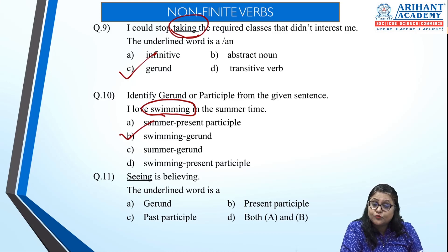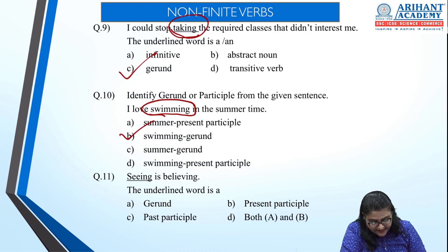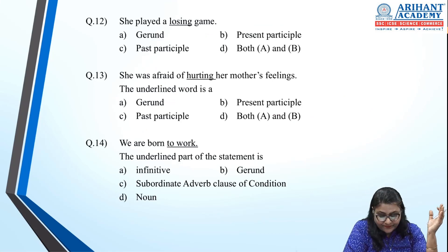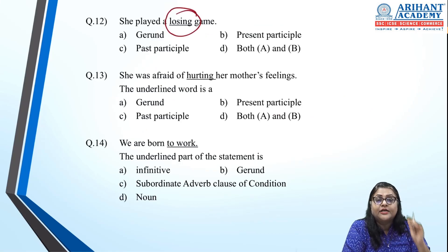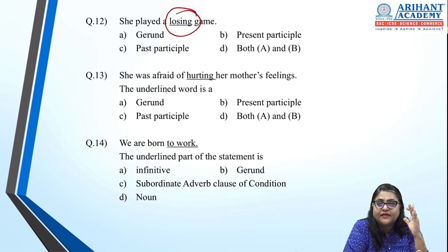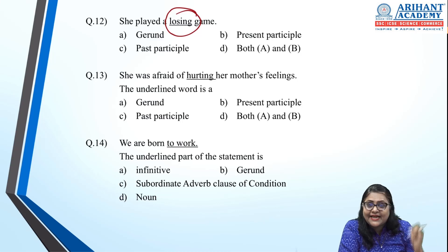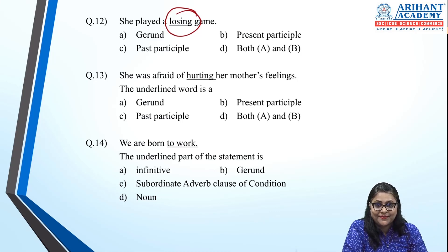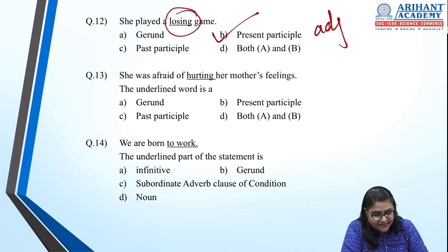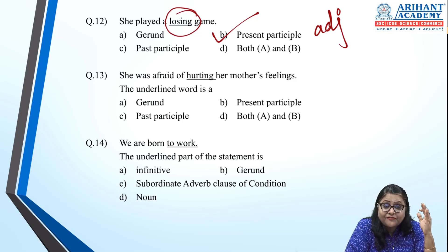'Seeing is believing' — what is seeing? Believing. So 'believing' is a gerund. Next: 'She played a losing game.' If I ask 'what?', I don't get the name of an activity — 'losing' is describing the game, which game? A losing game. So it acts as an adjective — it is a present participle. Next: 'She was afraid of hurting her mother's feelings.' She was afraid of what? Hurting — that's the name of the activity, so it is a gerund.